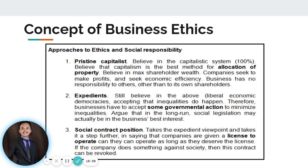Now let us discuss the seven approaches to ethics and social responsibility. Number one: Pristine Capitalist — believes in the capitalistic system as the best method for allocation of property, seeks to maximize shareholders' wealth, pursues economic efficiency, and holds that business has no responsibility to others beyond its own shareholders. Number two: Expedient — still believes in liberal economic democracies but accepts that inequalities happen, so businesses must accept some governmental action to minimize inequalities. It argues that in the long run, social legislation may actually be in the business's best interest.